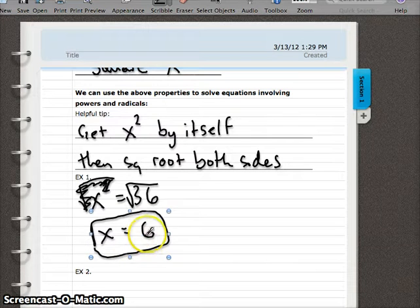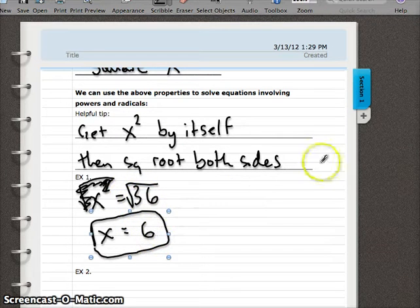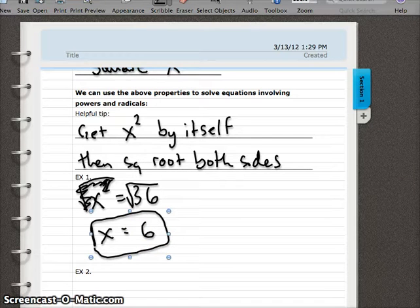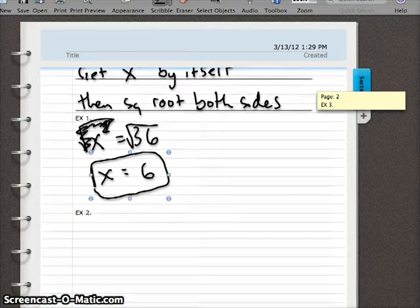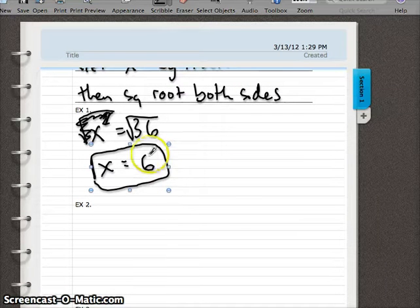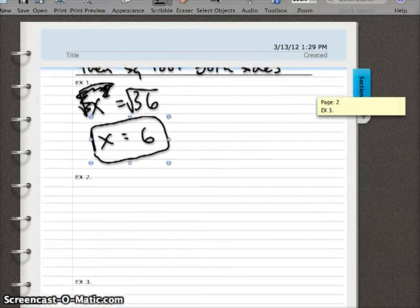Now later on in math, you'll find out that square roots of numbers, if they're perfect squares, are going to be a positive and a negative value. So just keep that in mind for later purposes. For our purposes right now, since we're going to be solving for lengths of triangles, we're only going to be dealing with positive values. So the square root of 36 for our purpose is just positive 6.